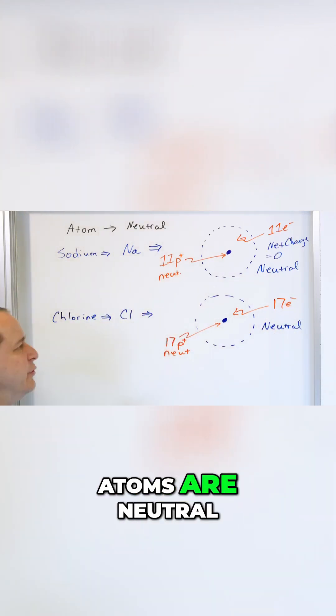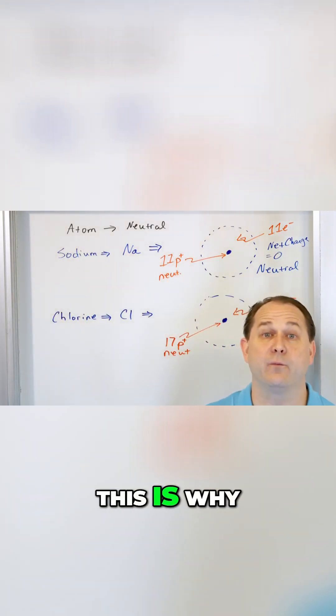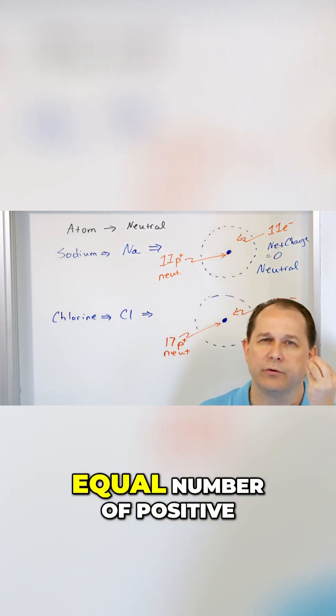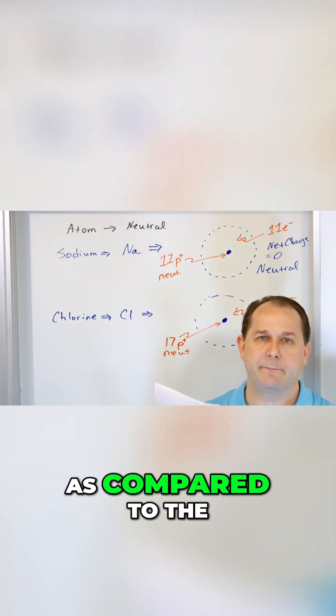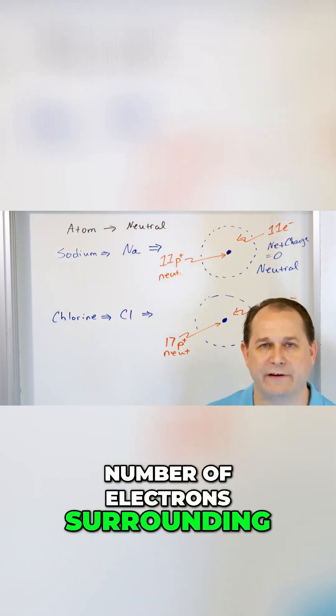So in the beginning, I told you that atoms are neutral, electrically neutral. This is why: because they have an equal number of positive protons in the nucleus as compared to the number of electrons surrounding the nucleus.